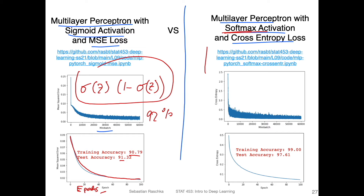On the right-hand side, you can see the main takeaway — the loss goes down, which is what you want. But what you can also see is that the training accuracy is 99% and the test accuracy is almost 98%. There's a little bit of overfitting, which we will talk about after the Jupyter notebook video. But what you can see is the cross-entropy loss actually works much better here than the MSE loss.